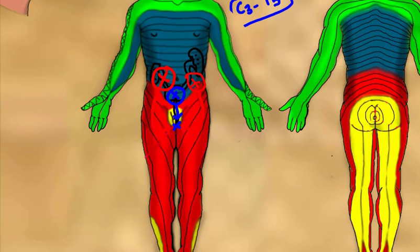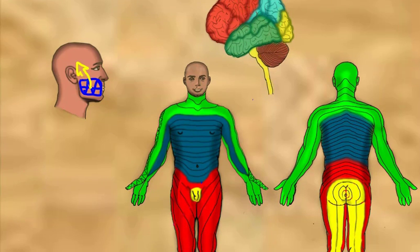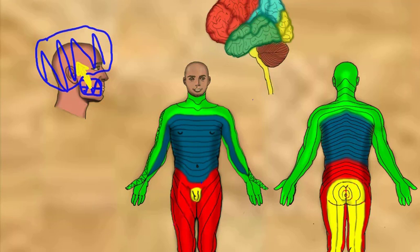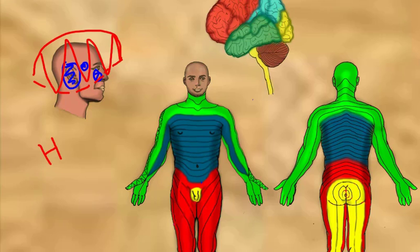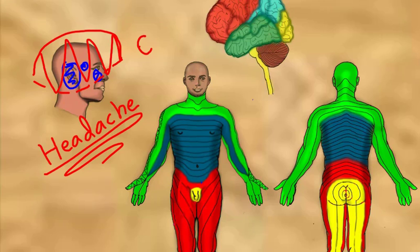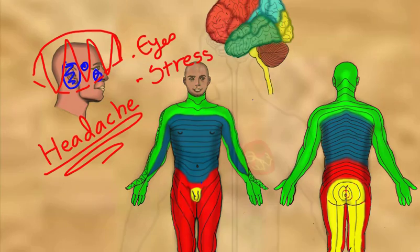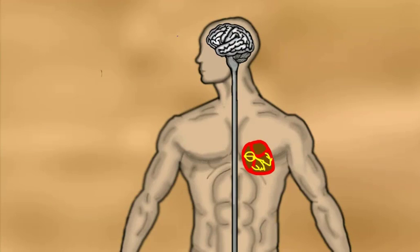Pain for the ureters is referred to the testicles, while pain from the trigone of the bladder is referred to the tip of the penis. Another example is the toothache or tooth pain, one of the most noxious types of pain. It's referred to the head. Also, inflamed nasal sinuses, middle ear, or intracranial mass are all contributing factors for causing headache. Overexposure of the eyes to light or even emotional stress, which is not even physical, causes the pain we call headache.